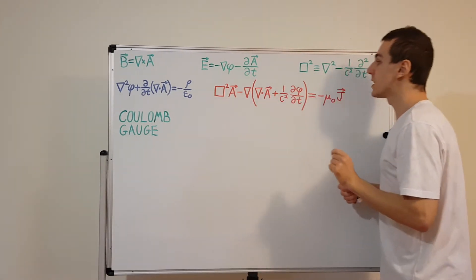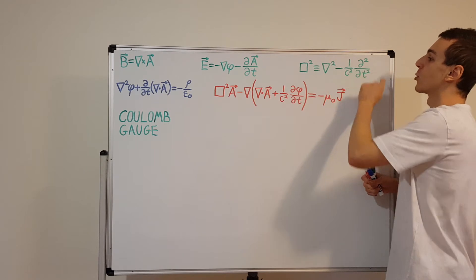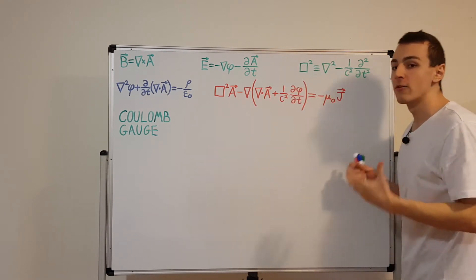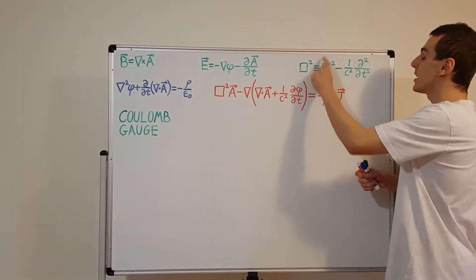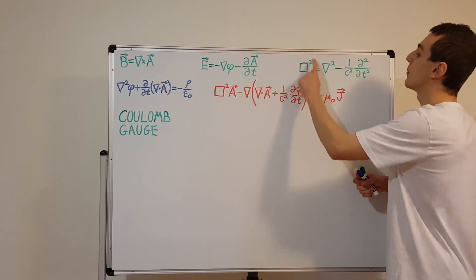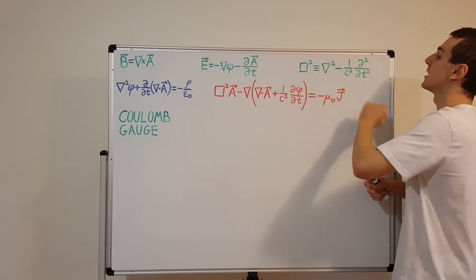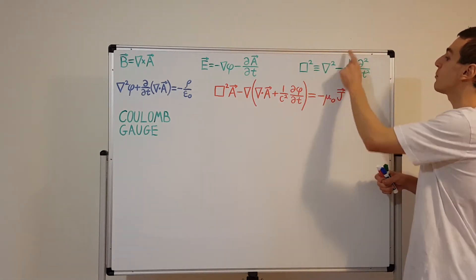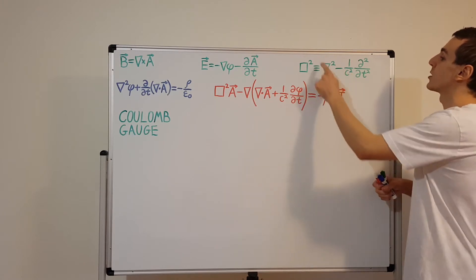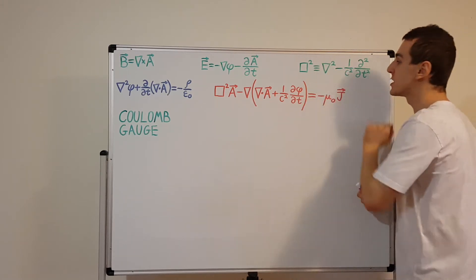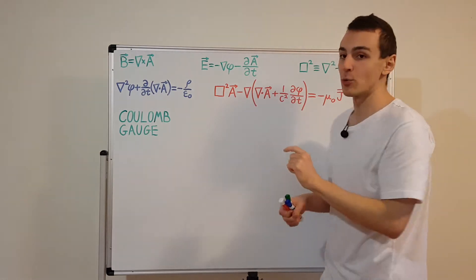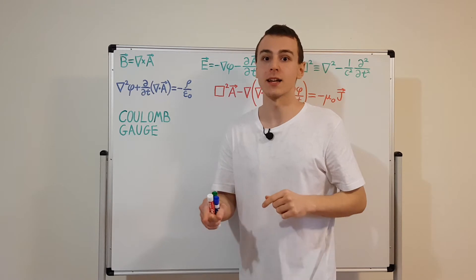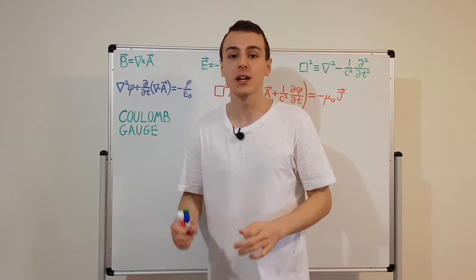A quick side note: this over here is the d'Alembertian, or the d'Alembert operator. It is a generalization of the Laplacian to four-dimensional spacetime. The Laplacian is for three-dimensional space, while the d'Alembertian generalizes it to 4D spacetime. We use a convention that puts a minus sign in front of the temporal component and plus signs in front of the spatial components — this is called the signature of the metric in special relativity.